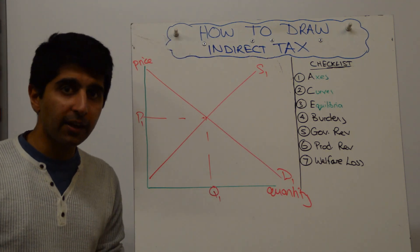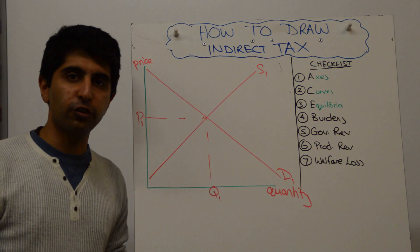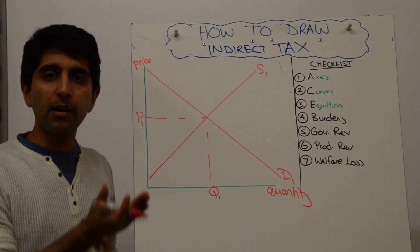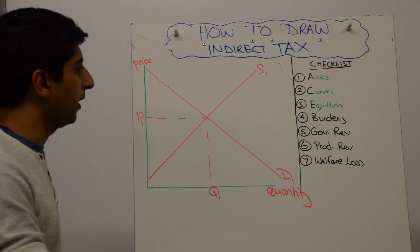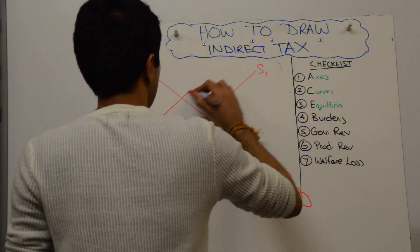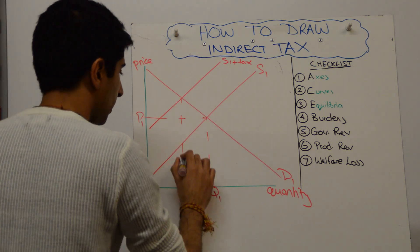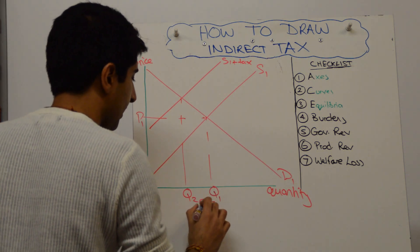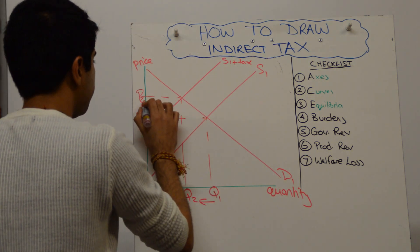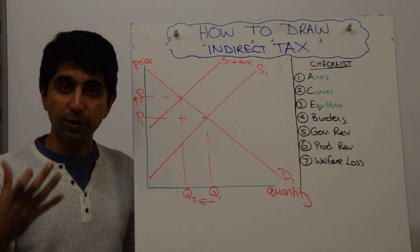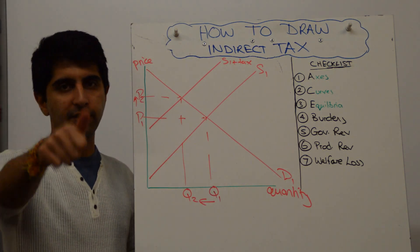Next, I want to show you your indirect tax. You know that indirect tax increases cost of production for firms. We're going to assume it's a unit tax. It's a parallel shift upwards of the supply curve, from S1 to S1 plus tax. New equilibrium we know is here at Q2 and P2. So draw your arrows to make reference to the fact that there is now a change in price and a change in quantity.